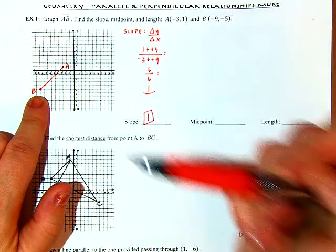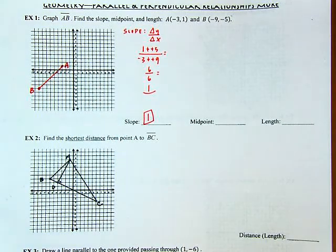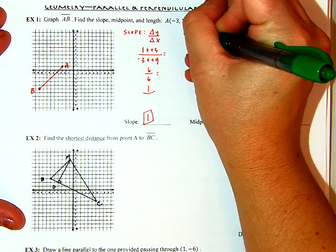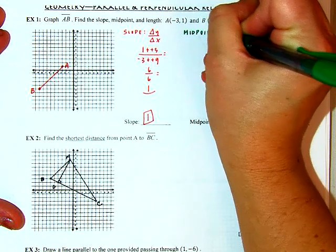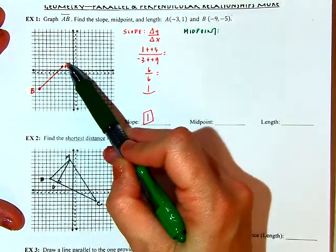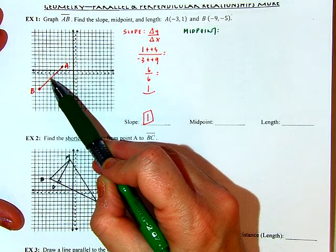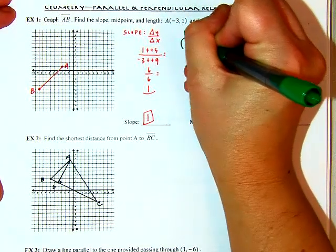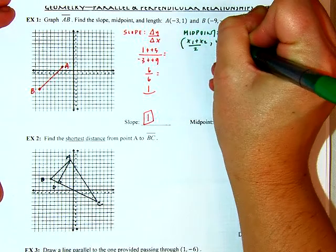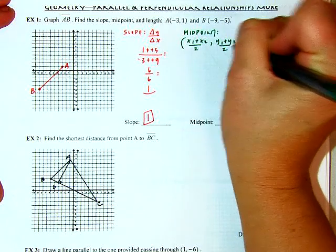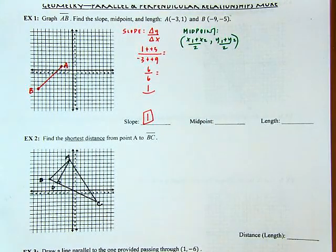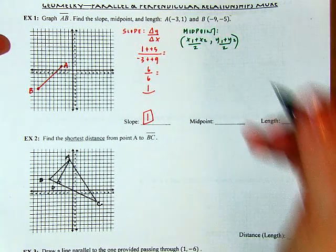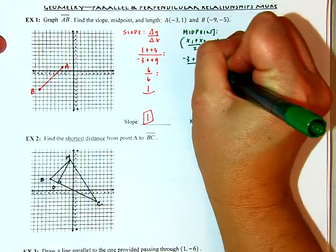From here we went up 6, right 6 — that makes sense. Next I need my midpoint. I can visualize where it's going to fall because it's the middle point — it divides my segment into two congruent parts; the midpoint bisects the segment. To find it, I'm looking at the average of X and the average of Y. We add the two X values together and divide by 2. So I have negative 3 plus negative 9, divided by 2.